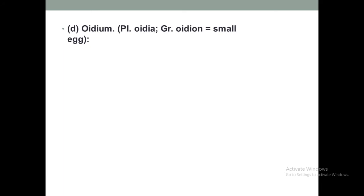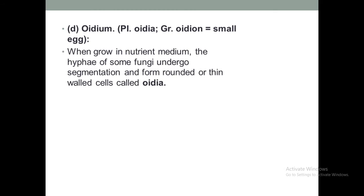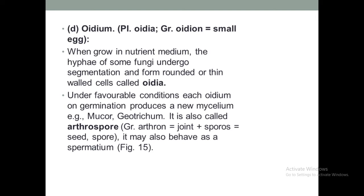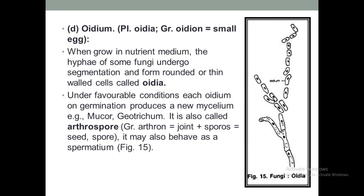The next type of vegetative reproduction is oidium. When fungi are grown in a nutrient medium, the hyphae of some fungi undergo segmentation and form rounded or thin-walled cells called oidia. Oidium is a Greek word meaning 'small egg'. Under favorable conditions each oidium on germination produces a new mycelium — for example, Mucor. It is also called an arthrospore, from the Greek 'arthro' meaning joint and 'spore' meaning seed. It may also behave as a spermatium. See the diagram of oidium.